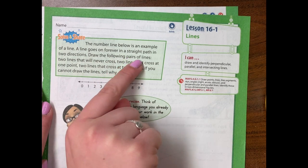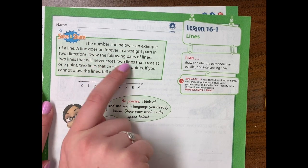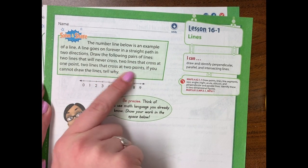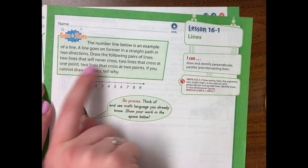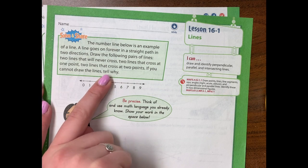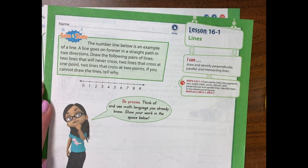Draw the following pairs of lines: two lines that will never cross, two lines that cross at one point, two lines that cross at two points. If you cannot draw the lines, tell why. So I'm going to underline the important information that I need to use.